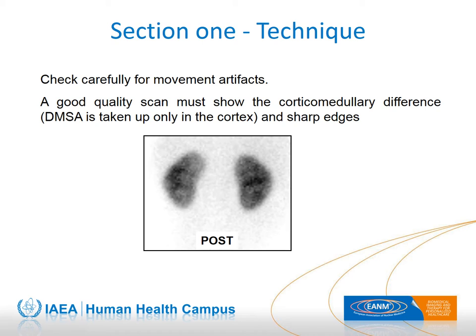Since DMSA is taken up only in the kidney cortex, the kidney's picture must show the cortical-medullary differentiation. A loss of visualization of this relation can be attributed to movement, the use of a wrong collimator, excessive distance between the table and the camera head, or an incorrect energy peak setting.